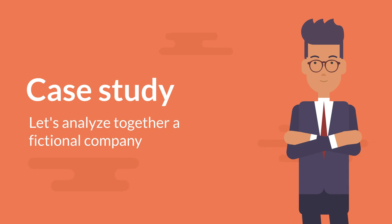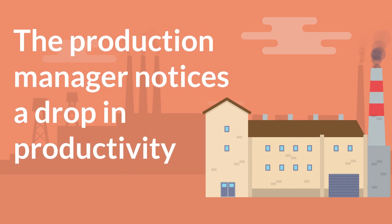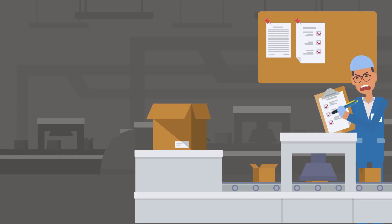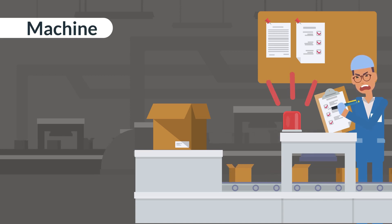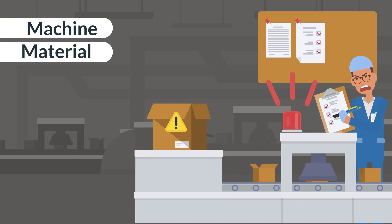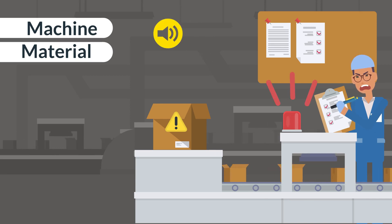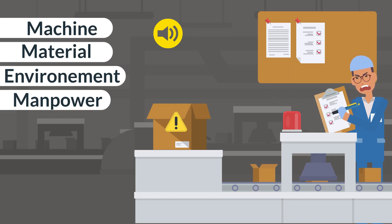Let's analyze together a fictional company. The production manager notices a drop in productivity. Let's go for a walk in the workshop. First, we notice a material problem — the machines regularly break down, and parts coming from the supplier have a high non-compliance rate. That creates a material problem. The operator in charge of the machine is particularly irritated because the sound level at the station is very strong. It is a problem of environment and manpower.